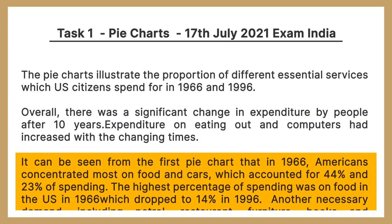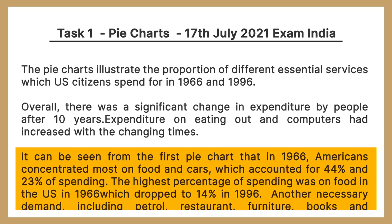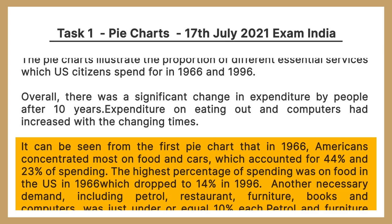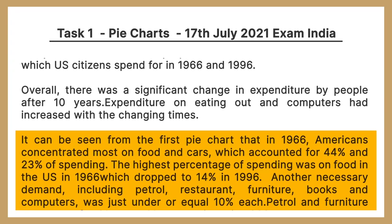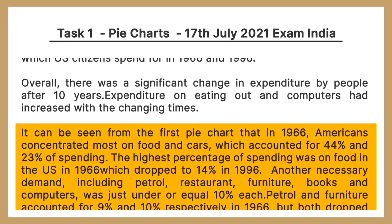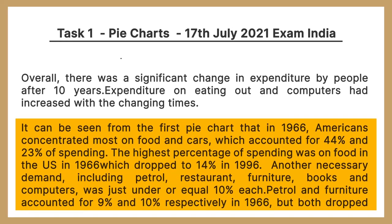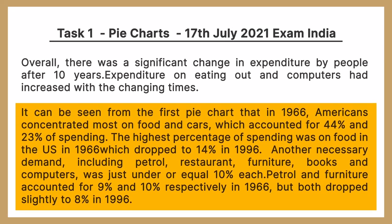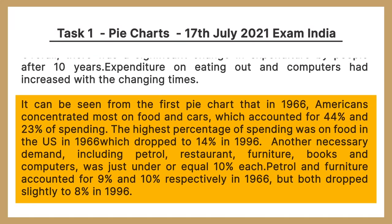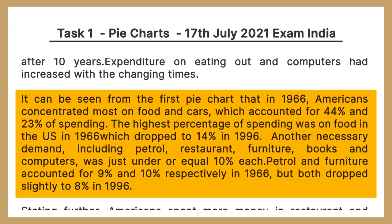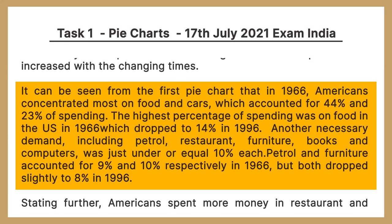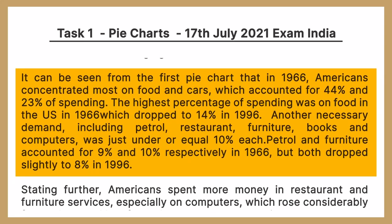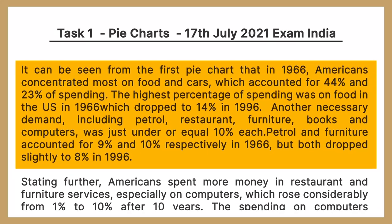It can be seen from the first pie chart that in 1966 Americans concentrated most on food and cars, which accounted for 44 percent and 23 percent of spending. The highest percentage of spending was on food in the US in 1966, which dropped to 14 percent in 1996. Other necessary demands including petrol, restaurant, furniture, books, and computers were just under or equal to 10 percent each.